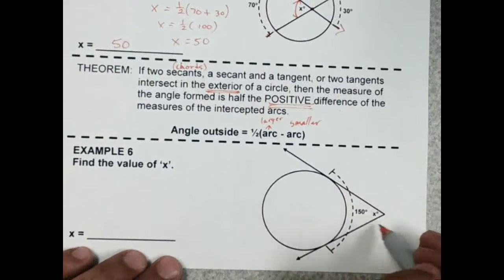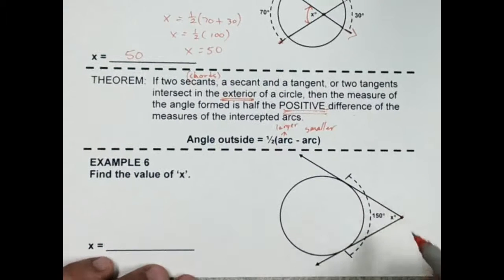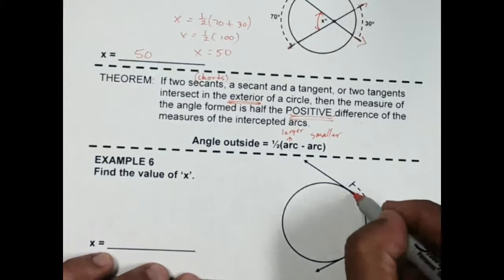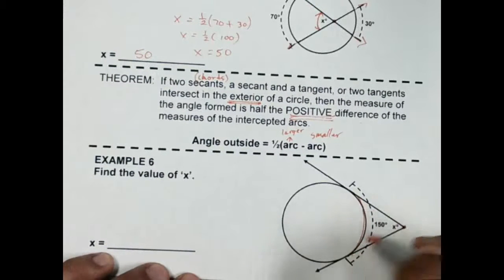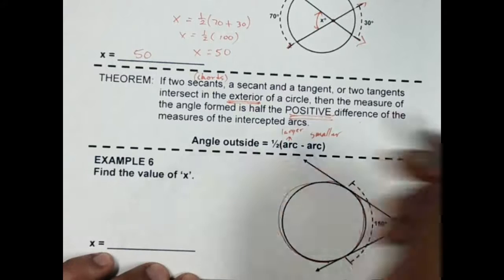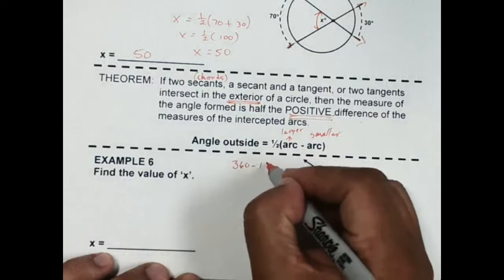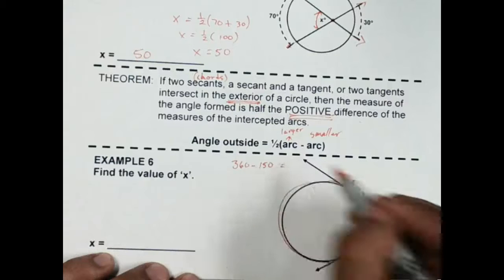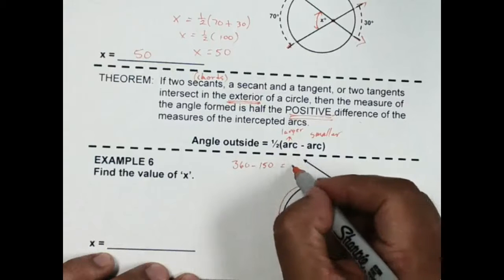So looking at example six right here, notice that my angle, my vertex, is outside. It's in the exterior of the circle. So this intercepted arc here is 150. We actually have to find the other part over here, which is kind of why we did that review. So we're going to have to do 360 minus 150. And we get 210.